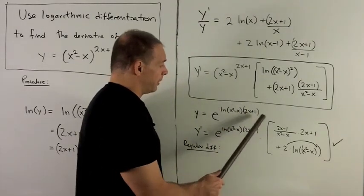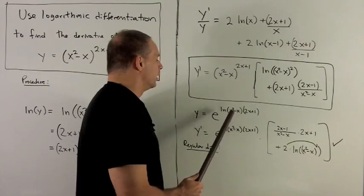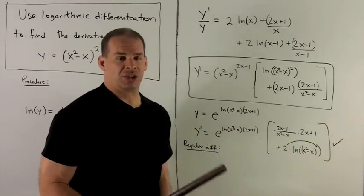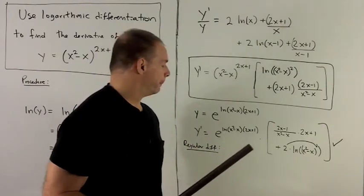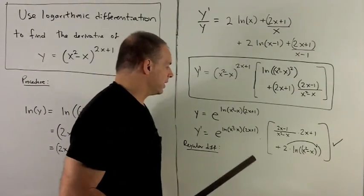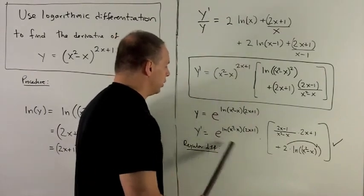This makes a little bit more sense to me, because if I have e to the u, the derivative is real easy. It's just rewrite your e to the u, and then multiply by the derivative of u.